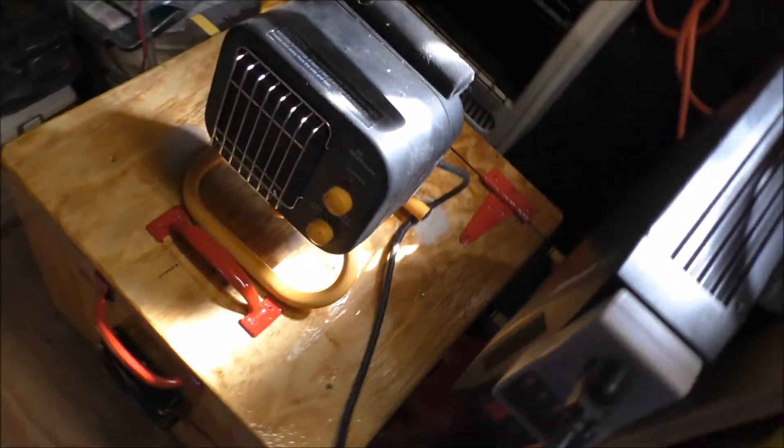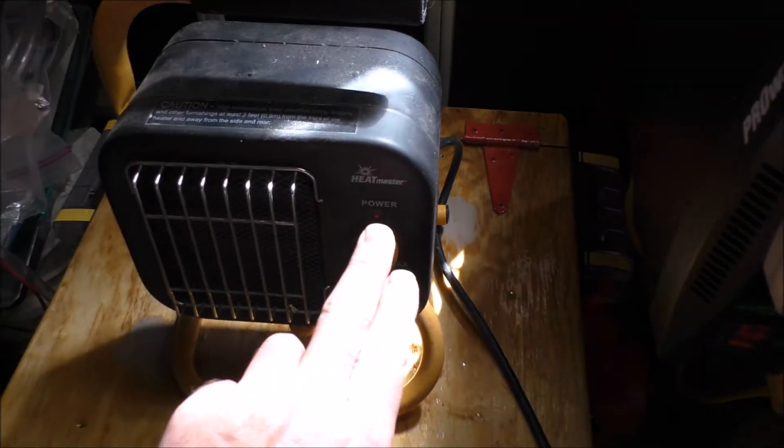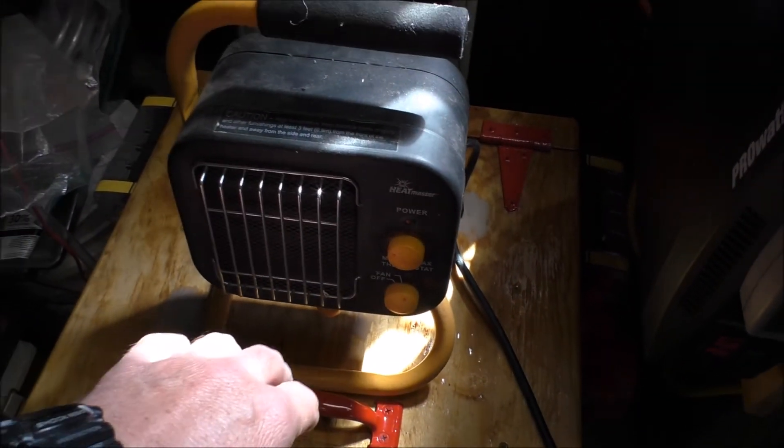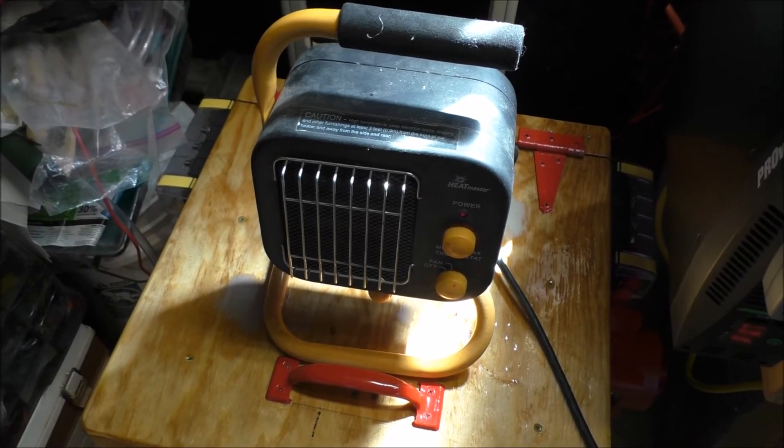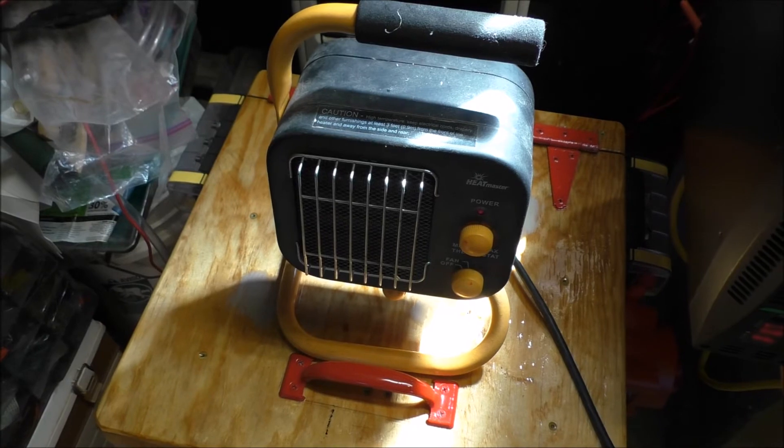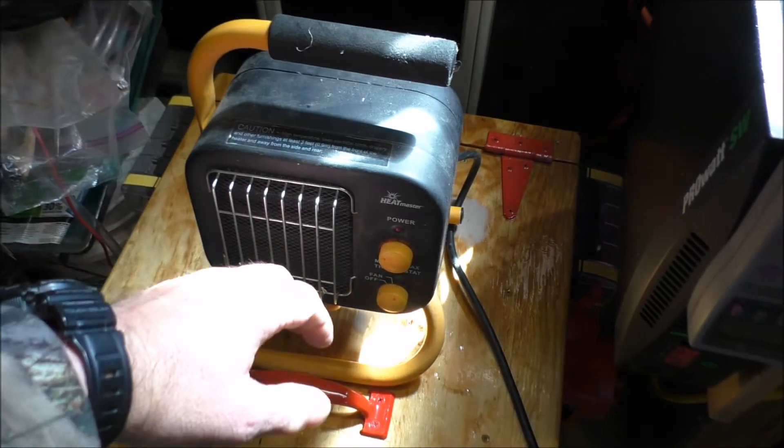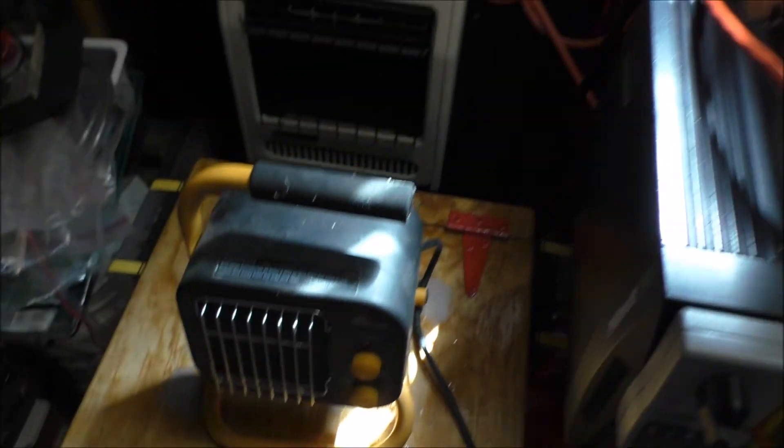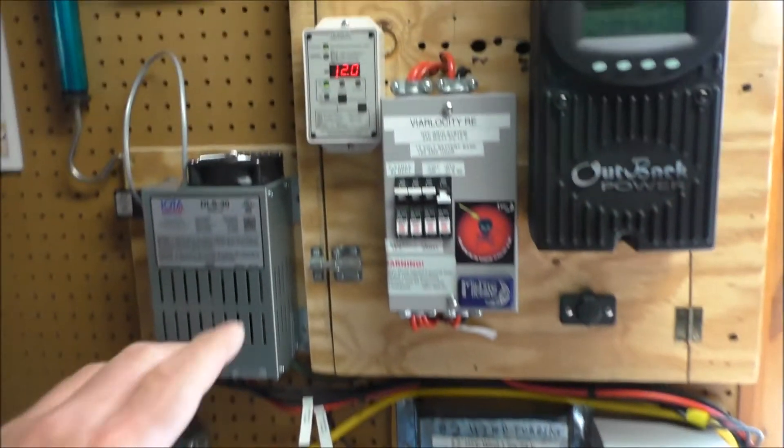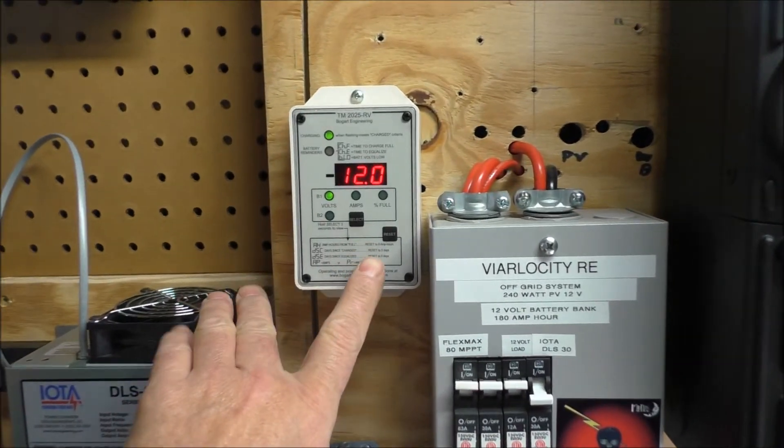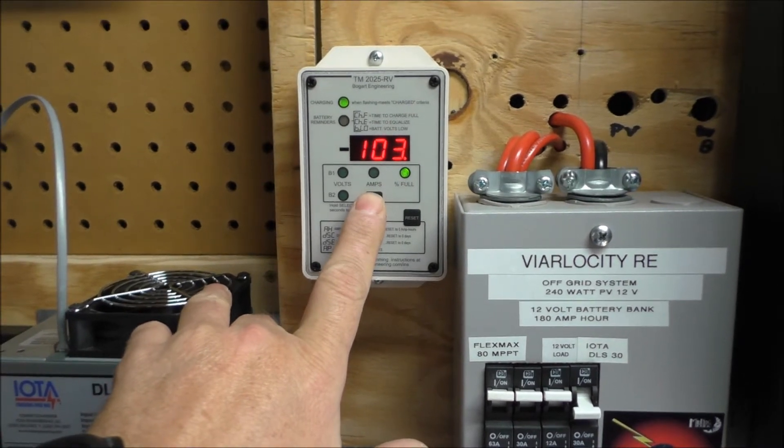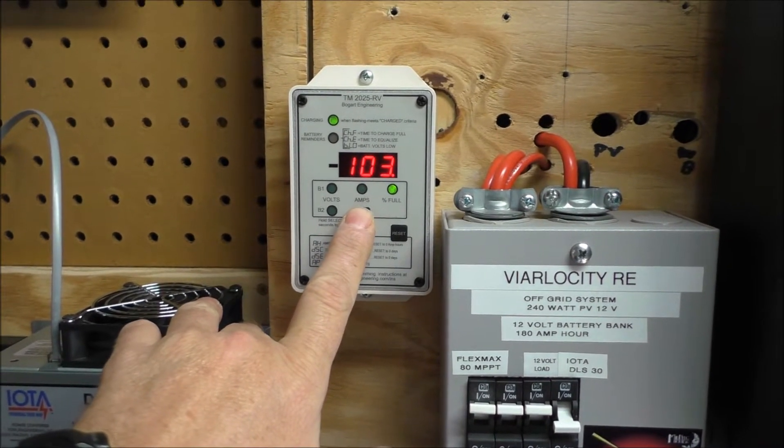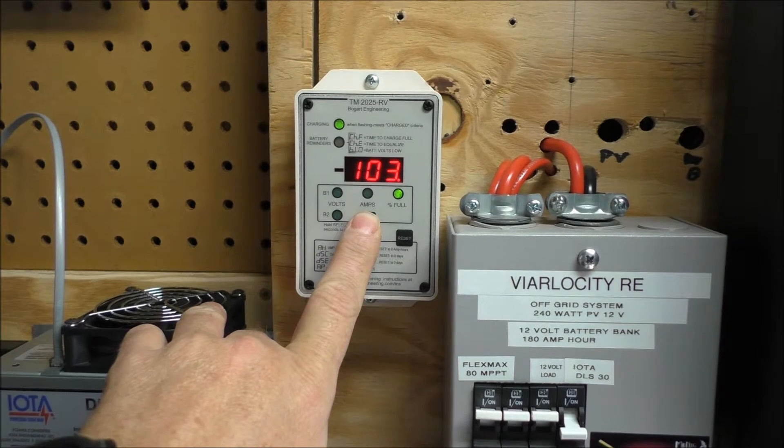This has a thermostat on it, so it'll cut on and off. It's just a test - if you really want to test your system, this is the way to do it. That is cool - that's 900 watts. We're holding voltage and our state of charge, the state of charge is still going up. We're at 103%.